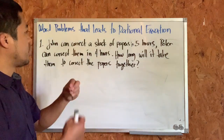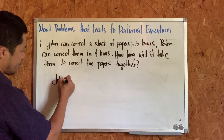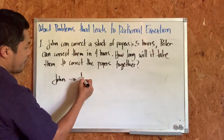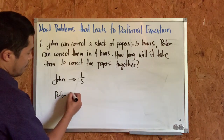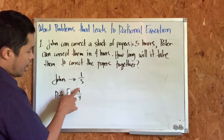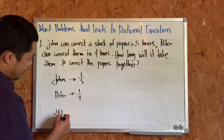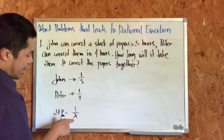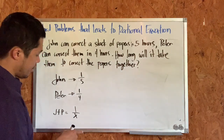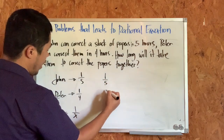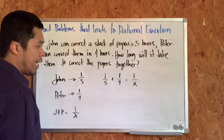The rate of John is one job in five hours, so that's 1/5. The rate of Peter is one job in four hours, so that's 1/4. The question is: if they work together, how long will it take them? That's x. So the equation is: 1/5 plus 1/4 equals 1/x, which is their combined rate.